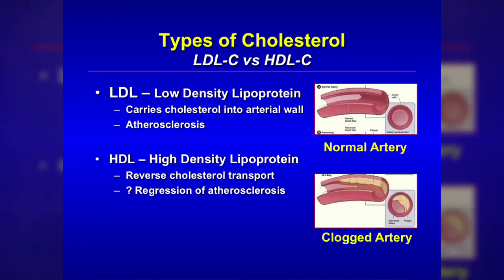Now let's distinguish the types of cholesterol. There's low-density lipoprotein cholesterol (LDL) and high-density lipoprotein cholesterol (HDL). LDL carries cholesterol potentially into the arteries if it reaches very high quantities. The high-density lipoprotein, the so-called good cholesterol, can actually get into the arteries and clean the cholesterol out, and is involved in regression of plaque. You can think of the L in LDL as standing for lousy and the H in HDL as standing for healthy.